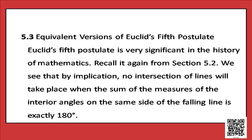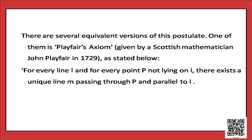Equivalent versions of Euclid's 5th postulate. Euclid's 5th postulate is very significant in the history of mathematics. We see that by implication, no intersection of lines will take place when the sum of the measures of the interior angles on the same side of the falling line is exactly 180 degrees, meaning two lines go parallel to each other. One equivalent version is Playfair's axiom, given by Scottish mathematician John Playfair in 1729.